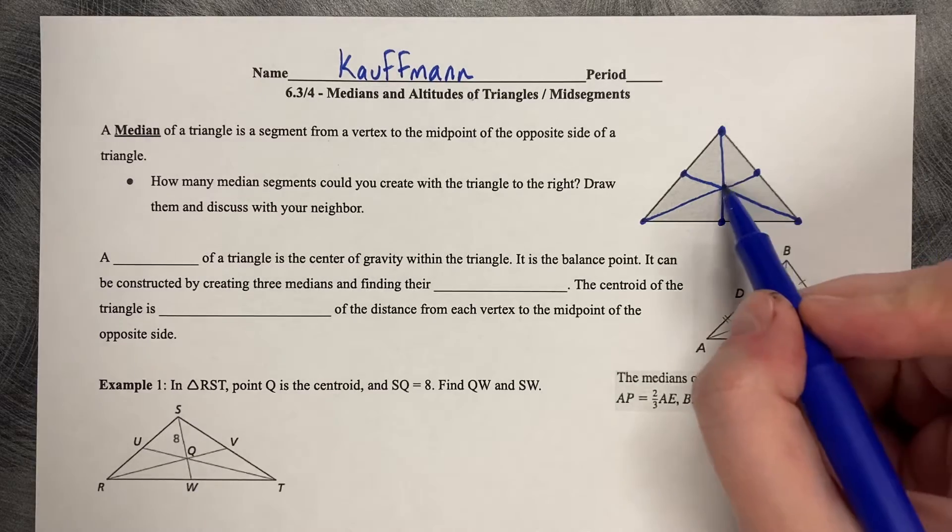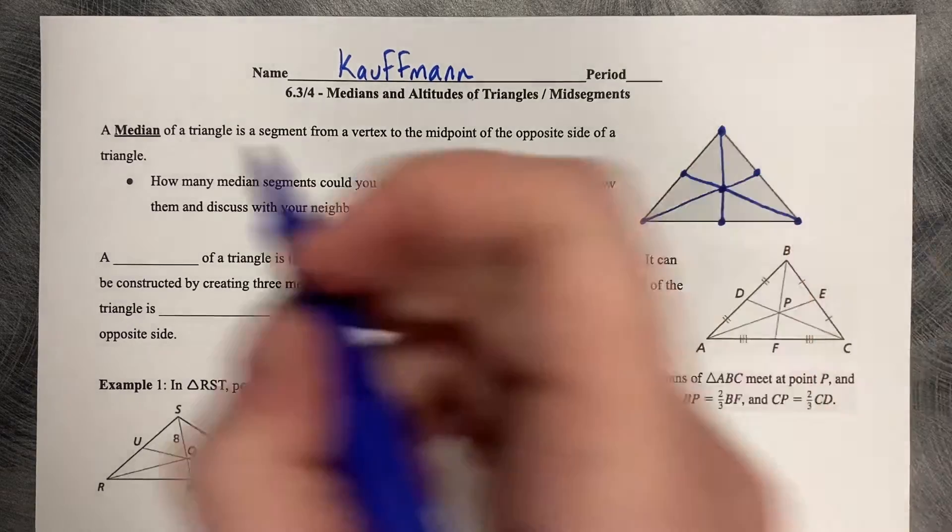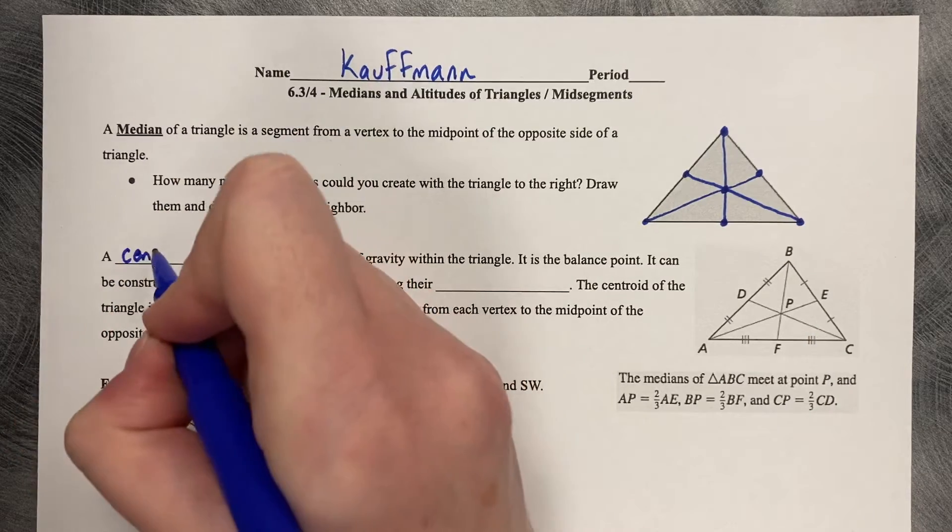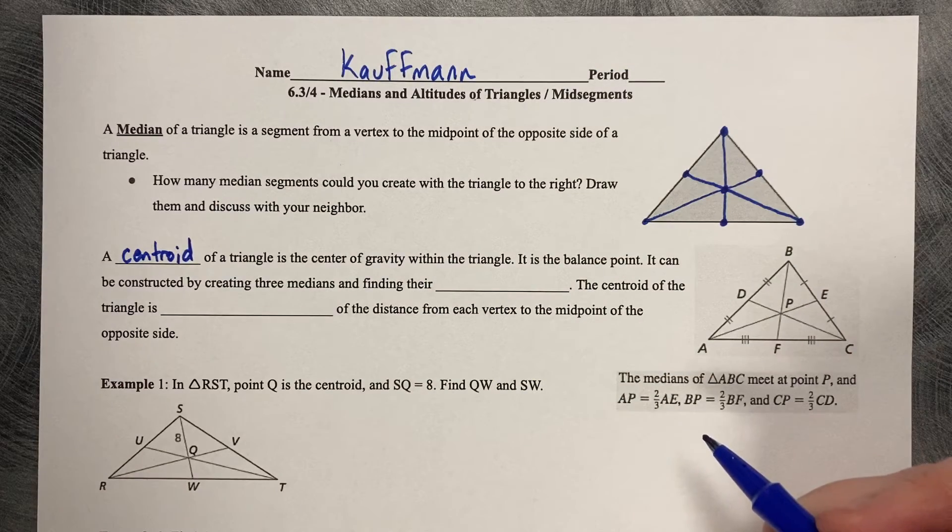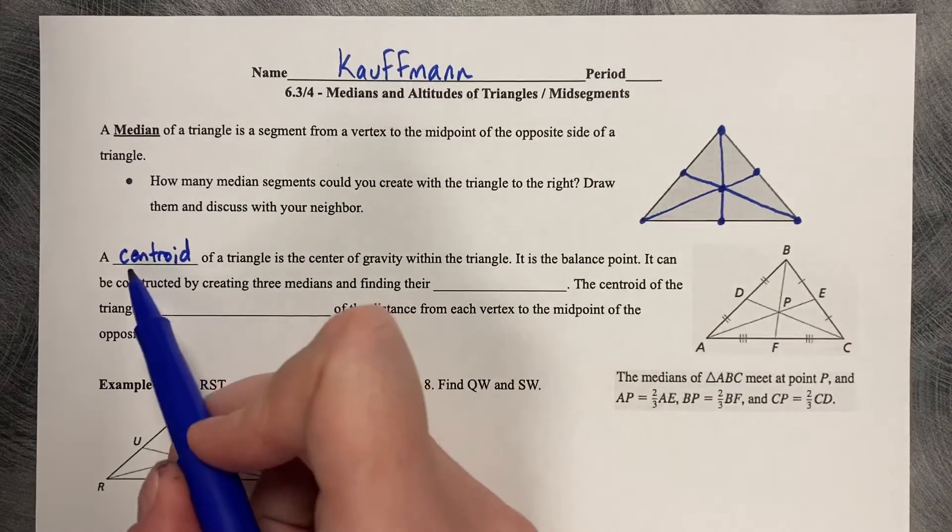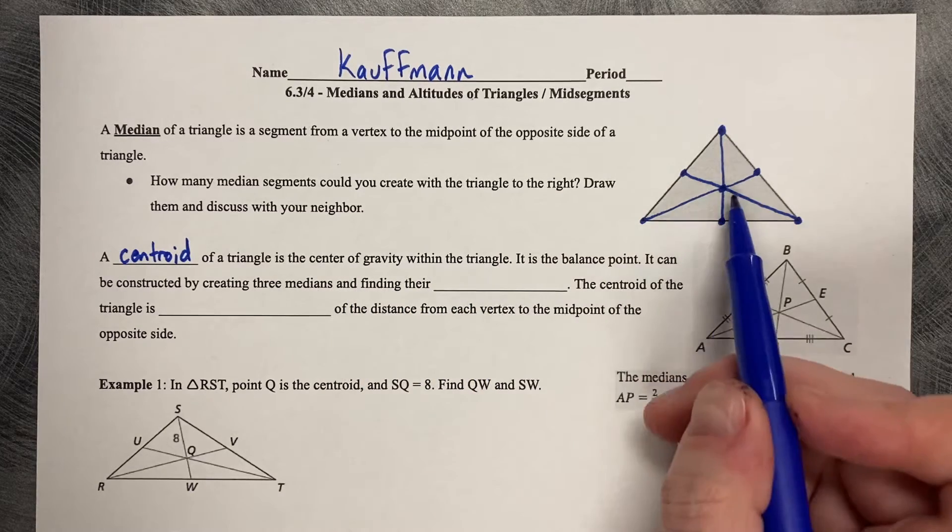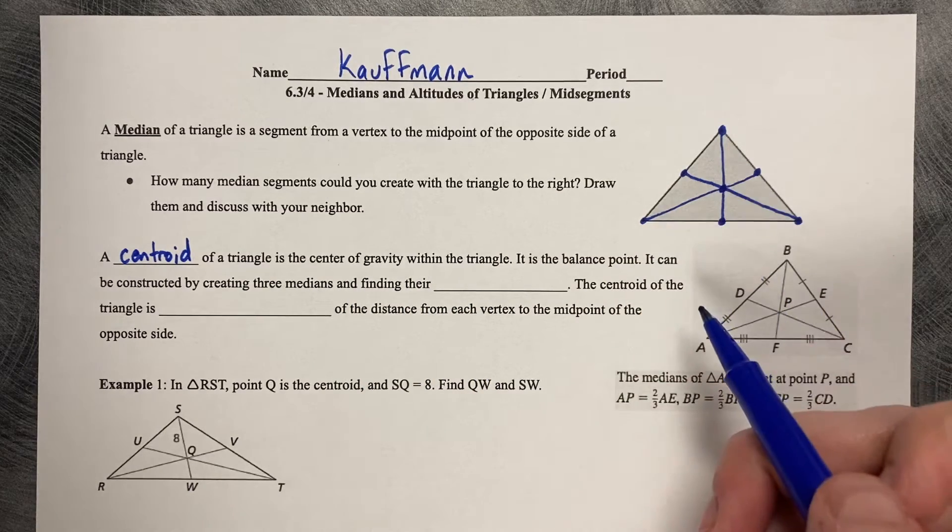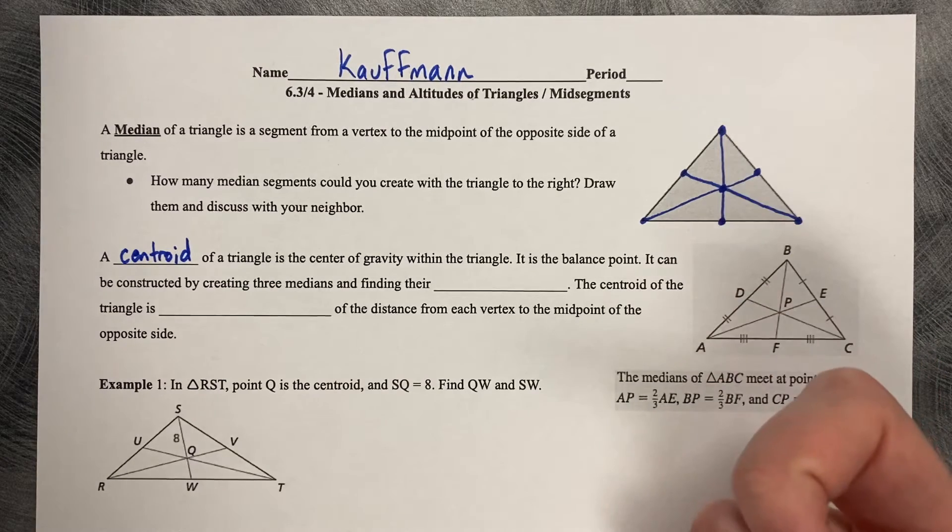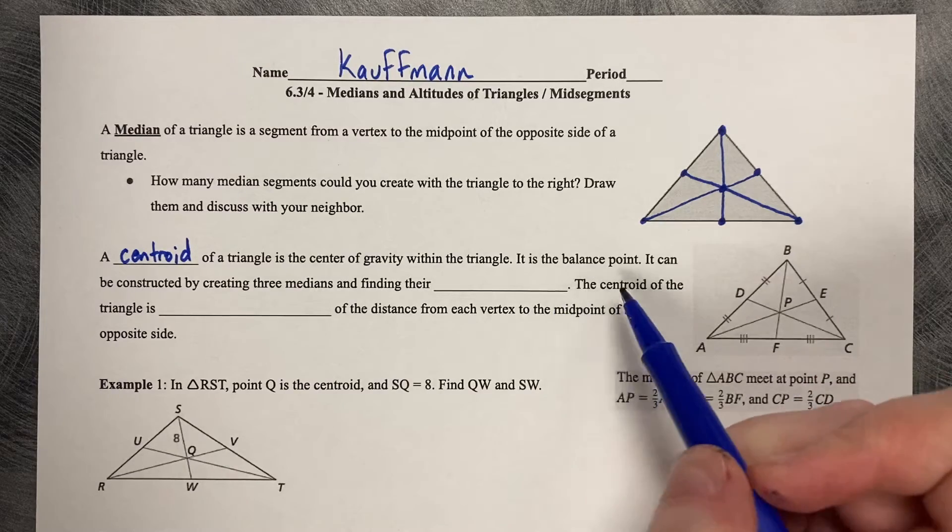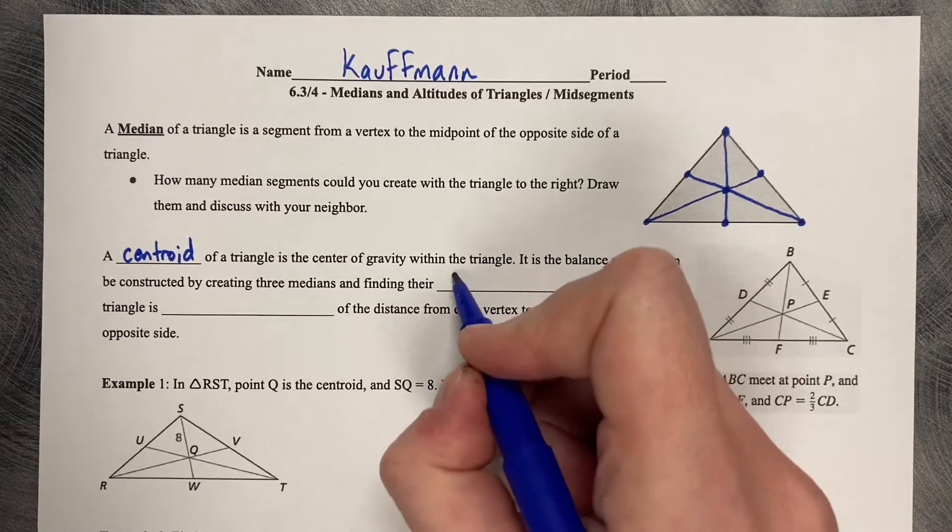And when those meet at each other, that intersection has a name. It's called the centroid. A centroid of a triangle is the center of gravity within the triangle. So imagine that this was cut out or was like a piece of cardboard. If you put that on your finger, it would balance right at that intersection. It is the balance point. It can be constructed by creating three medians and finding their intersection.